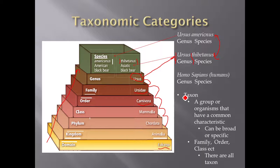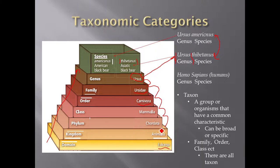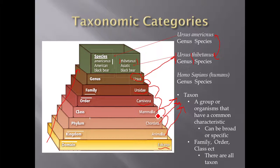There's a key term in your book that's important to understand — it's called taxon. A taxon is just a group of organisms that have a common characteristic. So Ursus is a taxon, Ursidae is a taxon. For example, Animalia — everything in this taxon is an animal. Chordata — everything in this taxon has a notochord and a spinal cord. Mammalia — everything in the mammalia taxon has mammary glands. It's just a fancy way of referring to these classification categories.